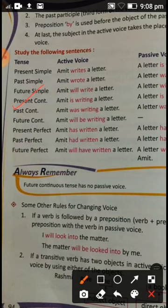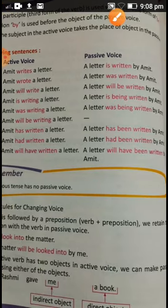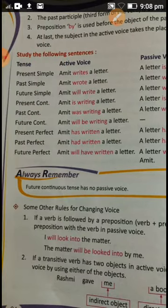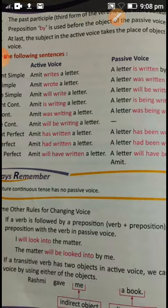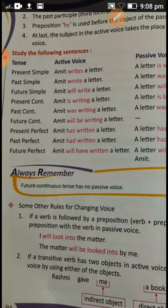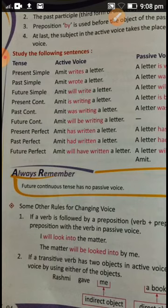For past continuous — 'was writing' — it changes to 'was being written.' For future continuous — 'Amit will be writing a letter' — this stays the same pattern: 'A letter will be written by Amit.' No need to add anything extra for future continuous.